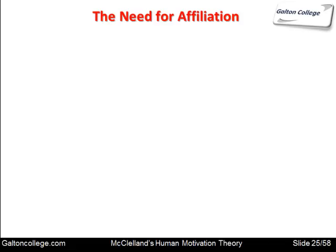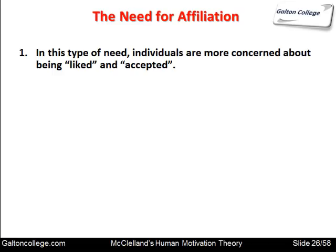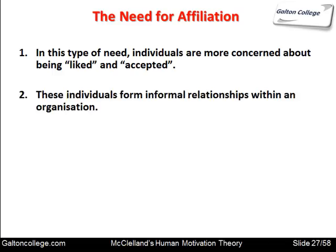The second need is the need for affiliation. Individuals with this need are more concerned about being liked and accepted — they're worried about their image. They form informal relationships within the organisation. While there are formal groupings determined by function — production, marketing, accountants — people who have a need for affiliation will seek out friends wherever they can. They want to be liked and accepted.